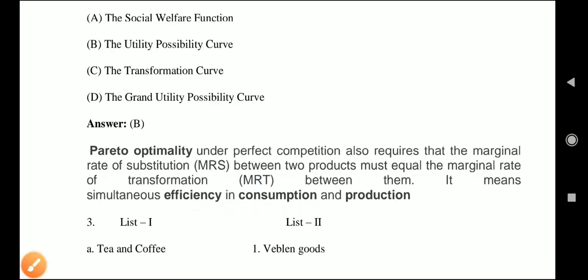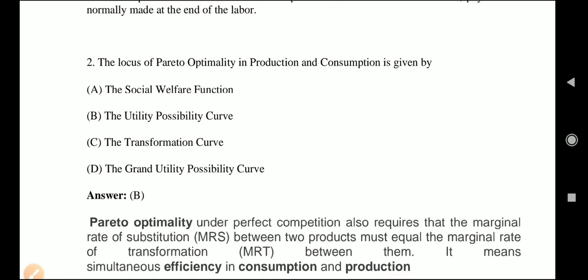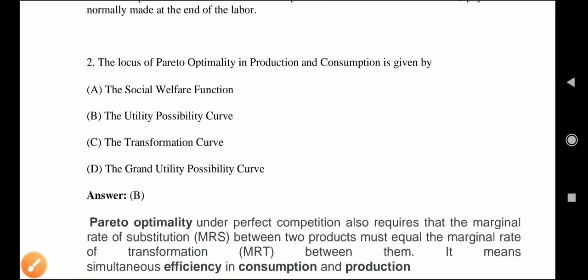This means there is simultaneous efficiency in both consumption and production. The utility possibility curve gives the maximum possible utility for one household given the utility of the other, representing a set of economic optimum points — i.e., Pareto optimal points. Any point on this curve represents efficiency and Pareto optimality conditions. Moving along this curve requires a change in output mix and reallocation of scarce resources. So the correct answer is the utility possibility curve.